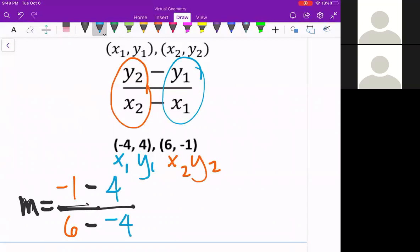And now we just need to see what do these equal. Negative 1 minus 4, a negative 5. 6 minus negative 4 becomes the same as a plus, so 10. So I have a negative 5 over 10 for a negative 1 half. And there is my slope.